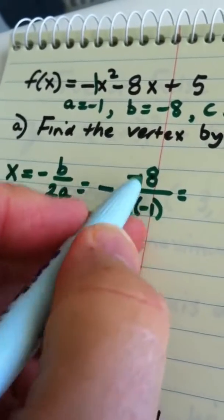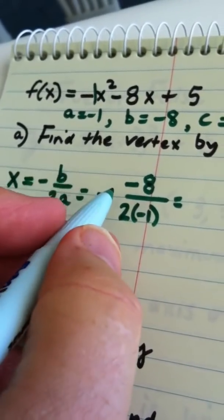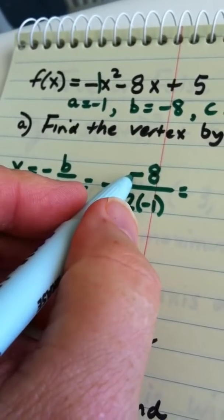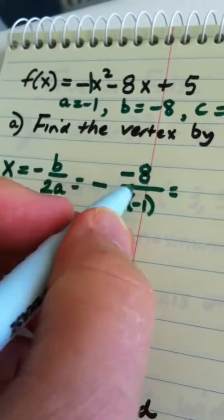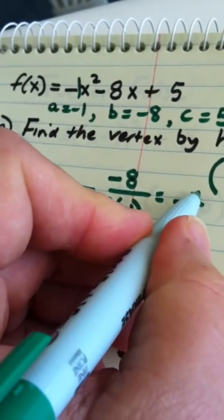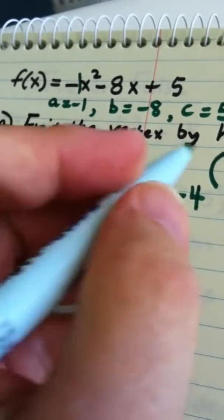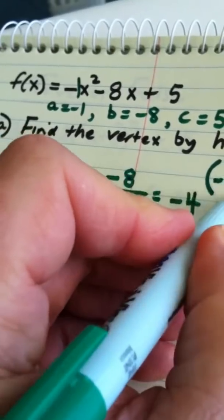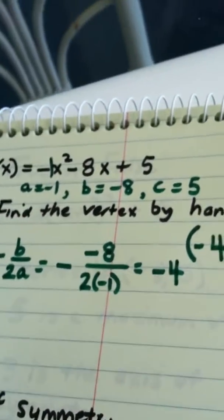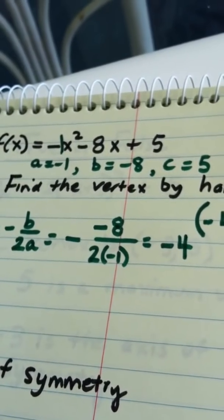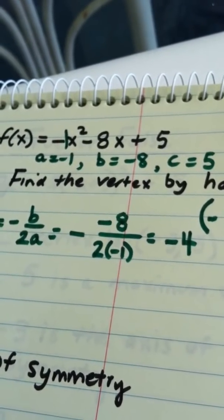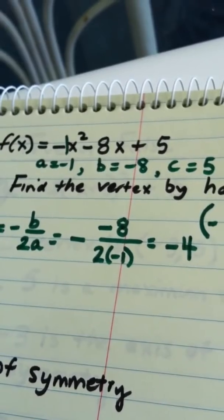So we have an awful lot of negatives here, but look what happens. This negative and this negative cancel, but this one still remains. So that means my answer is negative and it turns out to be a negative 4. So we now know what the x-coordinate of our vertex is and that is going to be a negative 4.